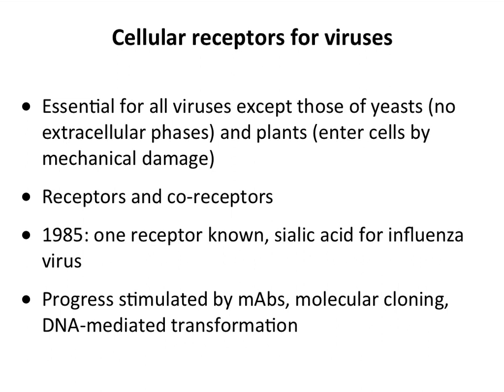There are what we call receptors and co-receptors — this is really an accident of discovery. Usually the first protein a virus needs is called a receptor, and the second one is called a co-receptor. For HIV, you'll see receptor and co-receptor, but really they both deserve to be called receptors. As late as 1985, we only knew one virus receptor: sialic acid for influenza virus.